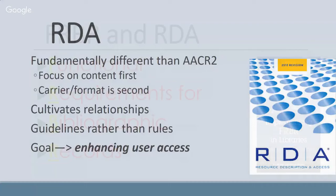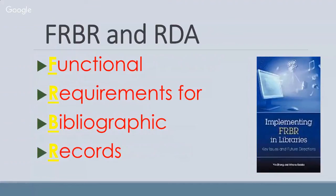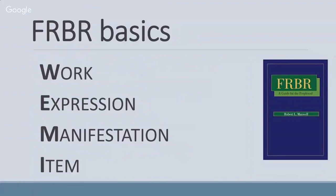Something that works hand in hand with RDA is FRBR, the Functional Requirements for Bibliographic Records. We're going to delve a little bit into FRBR basics to help our understanding of RDA. A key aspect is the importance for bibliographic information to answer user needs. To answer those needs, there are four key concepts that form the basis of FRBR: the work, the expression, the manifestation, and the item.